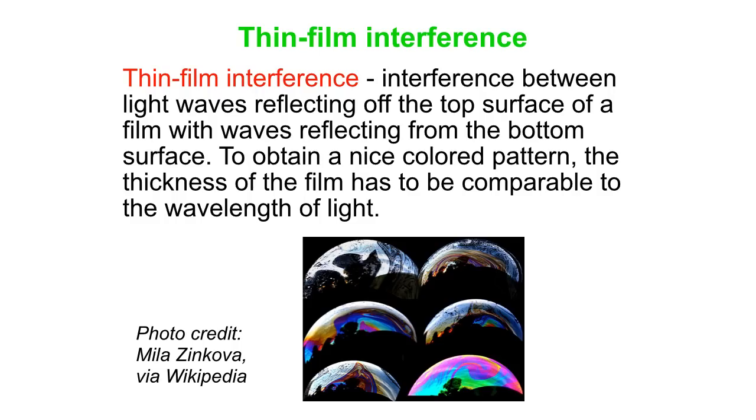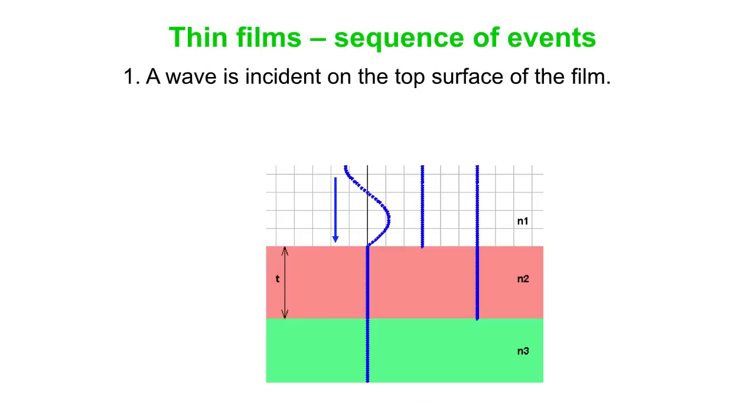What is thin film interference? It's interference between light waves reflecting off the top surface of a film with waves reflecting off the bottom surface. To get a nice, colorful pattern like we see in this photograph of the soap bubbles, the thickness of the film really needs to be comparable to the wavelength of light. We're talking hundreds of nanometers. Let's go through the sequence of events. We have a thin film. That's the thing in pink. It's sitting on a layer below, N3. The wave is incident in the top medium, medium 1, characterized by index of refraction N1.